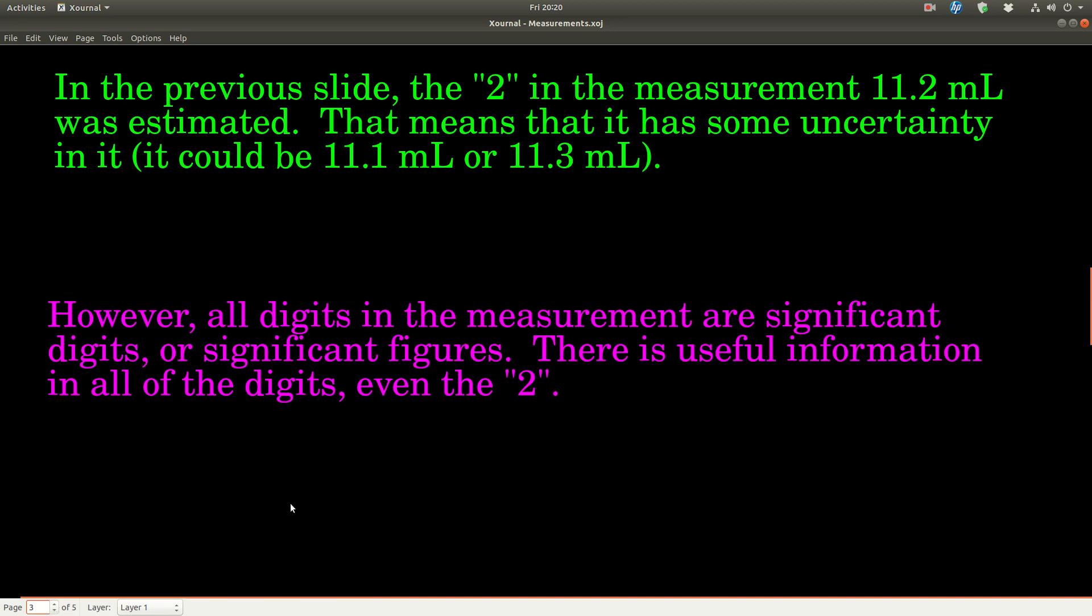With that measurement with the graduated cylinder, the last digit that we wrote, the two in the 11.2 milliliters or whatever number you chose, we had to estimate that and that means there's some uncertainty. But even though there's some uncertainty in that last digit, it is still what we call a significant digit or a significant figure. There's useful information in that digit.